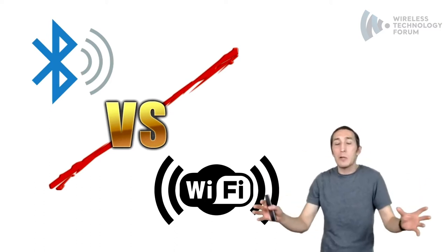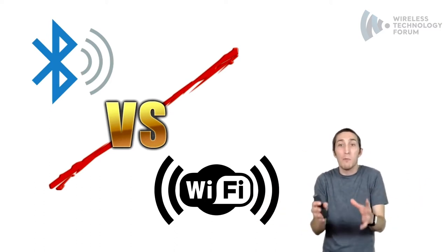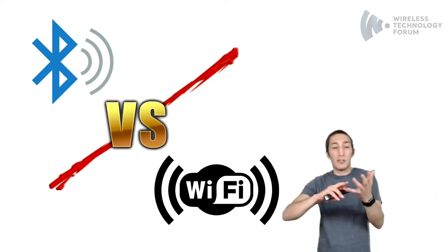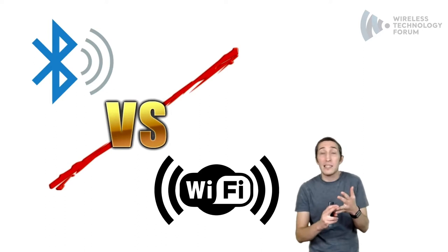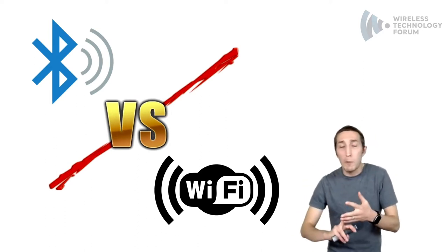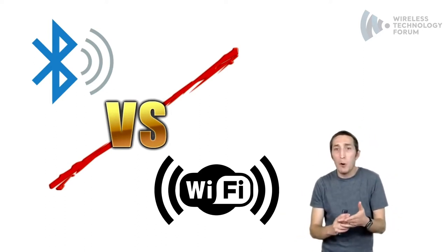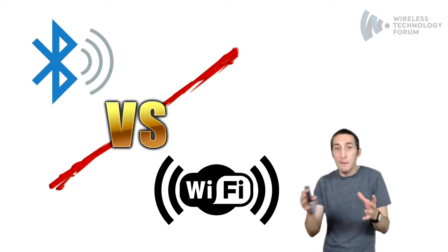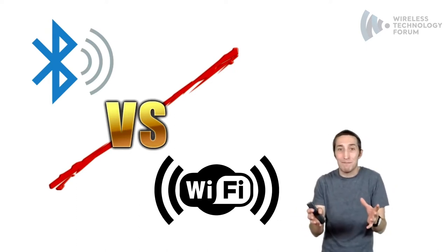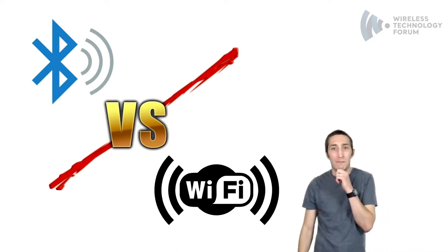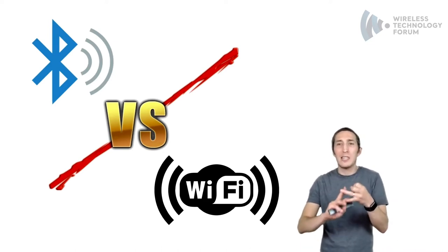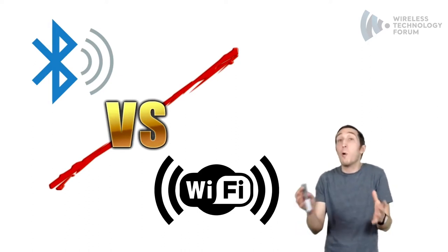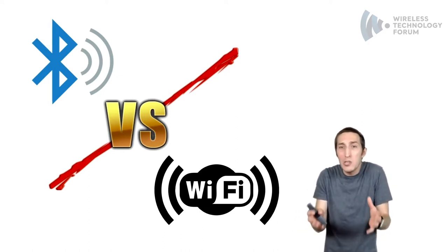In fact, if you go anywhere in the world where you find people, you will find both Wi-Fi and BLE. I could be at home, in the office, in a shopping mall, or in the airport, and I will be able to capture Wi-Fi and BLE packets. But here's the difference: everyone knows what Wi-Fi is, and they all know they're using it.